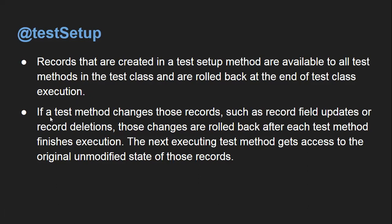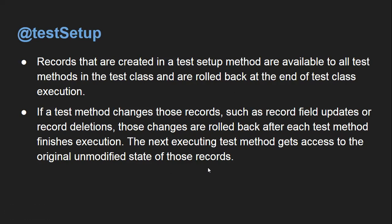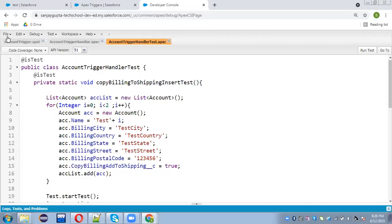This is an important point: if a test method changes those records — such as record field updates or record deletions — those changes are rolled back after each test method finishes execution. The next executing test method gets access to the original unmodified state of those records. I'm going to demo this as well.